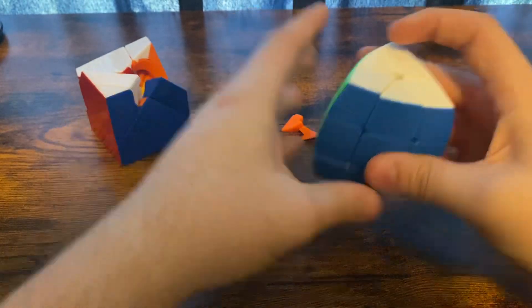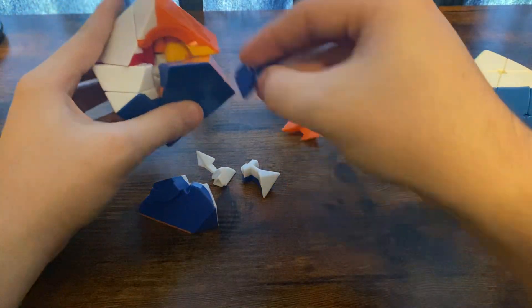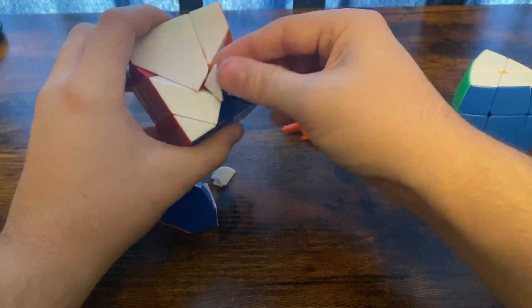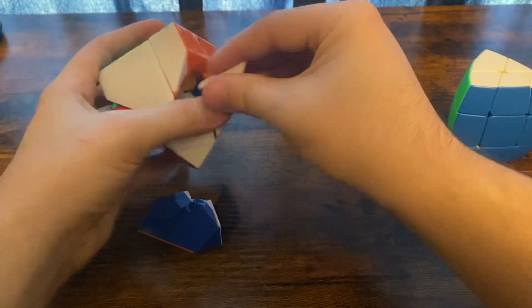You got these big chunky edges which correspond to these top and bottom edges, and finally these little triangular pieces are corners and they correspond to these pieces. With that out of the way, I'm going to put this back together and then get into the solving process.